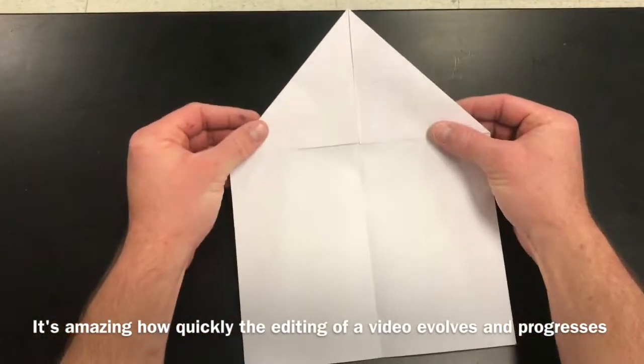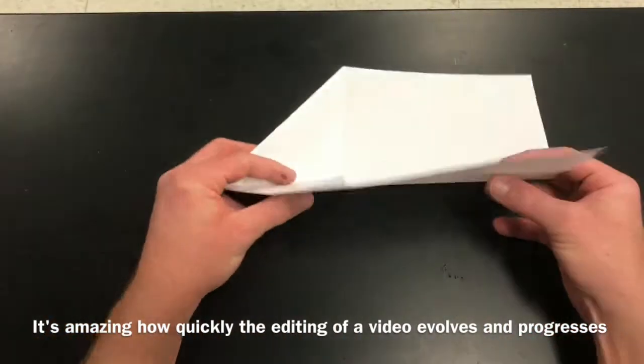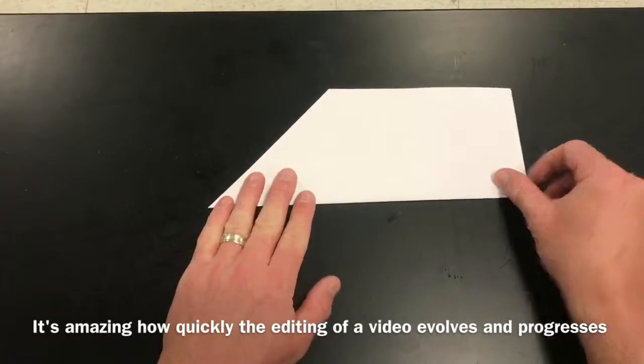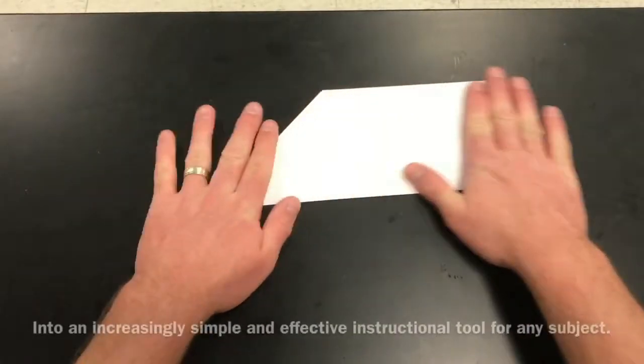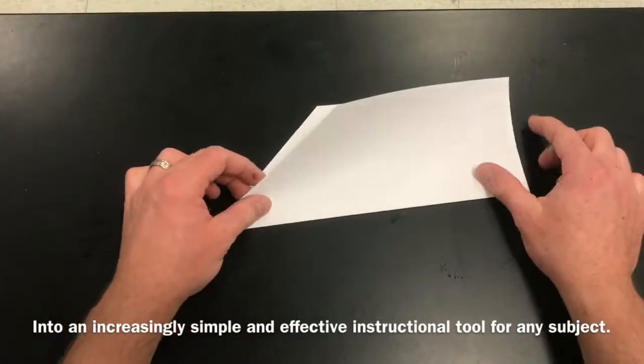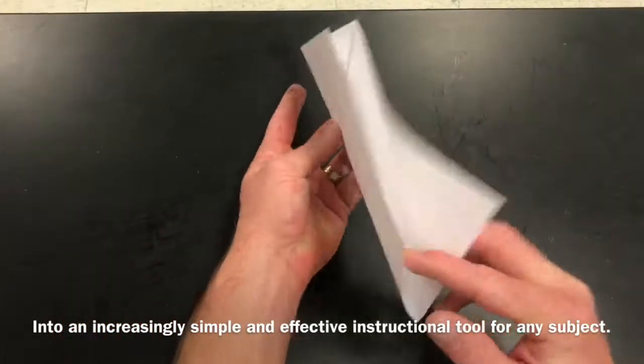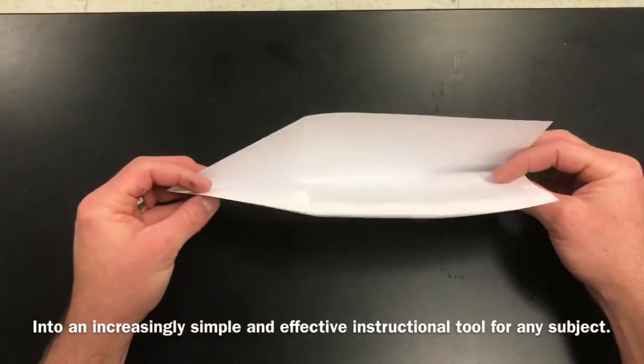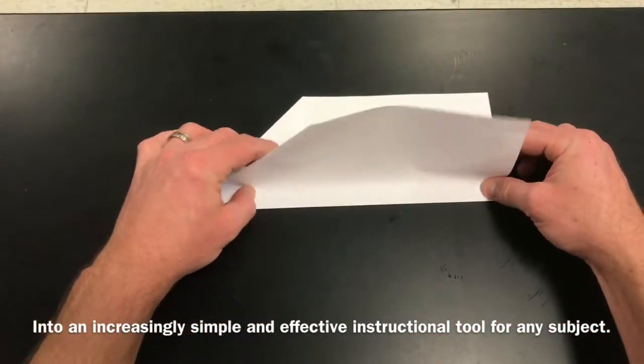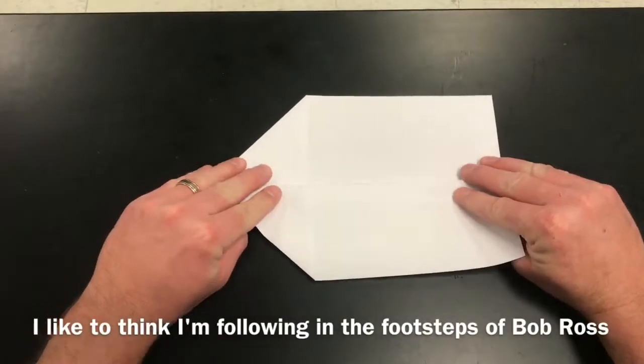Now I'm going to take the whole thing and I'm going to fold it in half. And then I've got the body of my plane. Now I need some wings. So I'm going to take one side and fold it down.